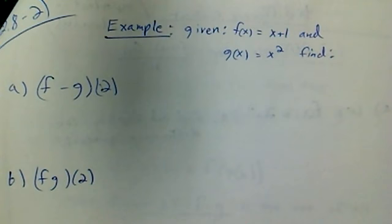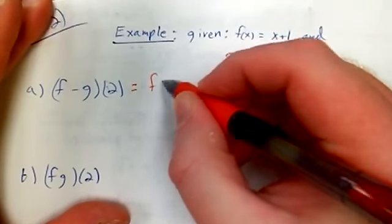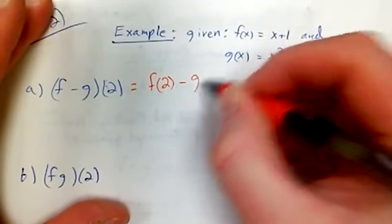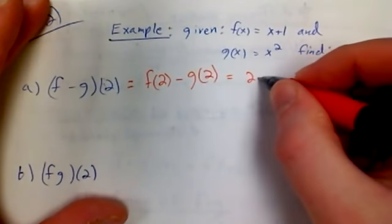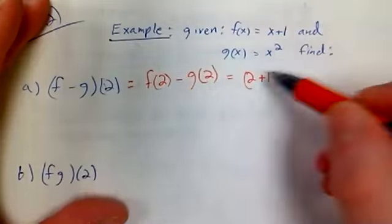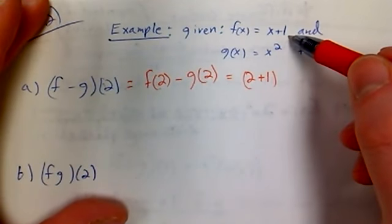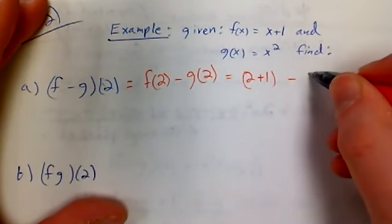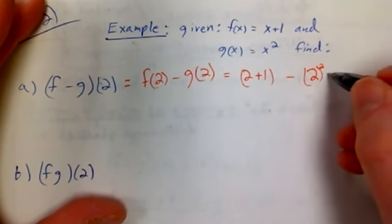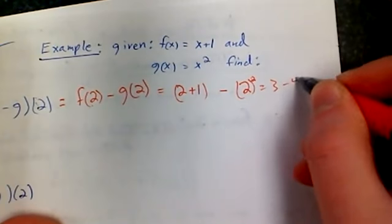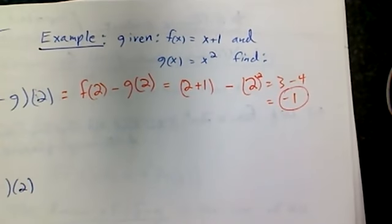So sometimes we don't want just the new function, sometimes we want a specific value. And there's different ways you can do this. So f minus g of 2 would be f(2) minus g(2). So that's pretty simple. That would just be 2 plus 1, that's what f(2) is right here if I plug it in, minus 2 squared. That's your g(2). So that's going to be 3 minus 4, which equals negative 1.